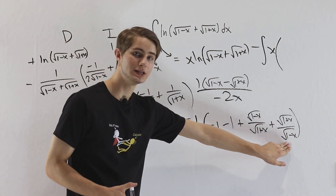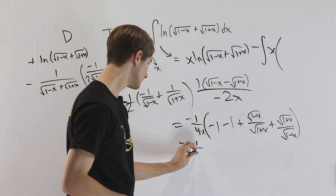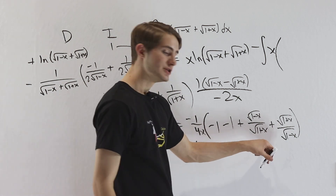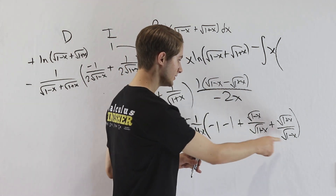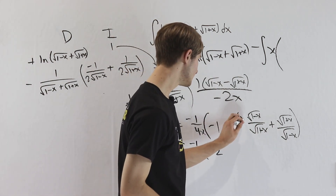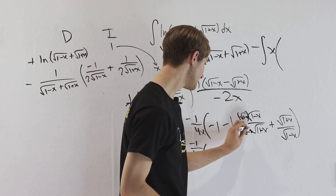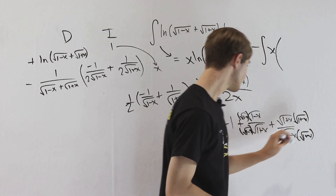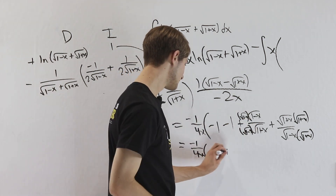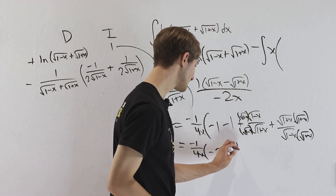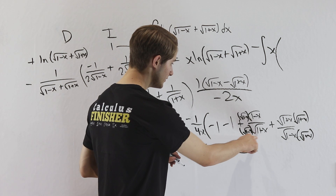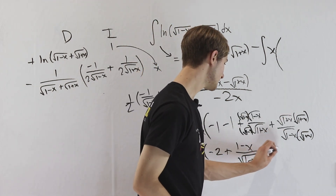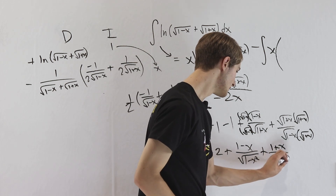Let's simplify even further. We have negative 1 over 4x, with negative 2 out in the front. For each of the remaining square root terms, we multiply by the conjugate of the denominator. For the first, we multiply by the square root of 1 minus x on top and bottom; for the second, we multiply by the square root of 1 plus x. Looking at just the first part: the square root of 1 minus x times itself gives 1 minus x on top, and the denominator becomes 1 minus x squared. Similarly, the second term gives 1 plus x over 1 minus x squared.